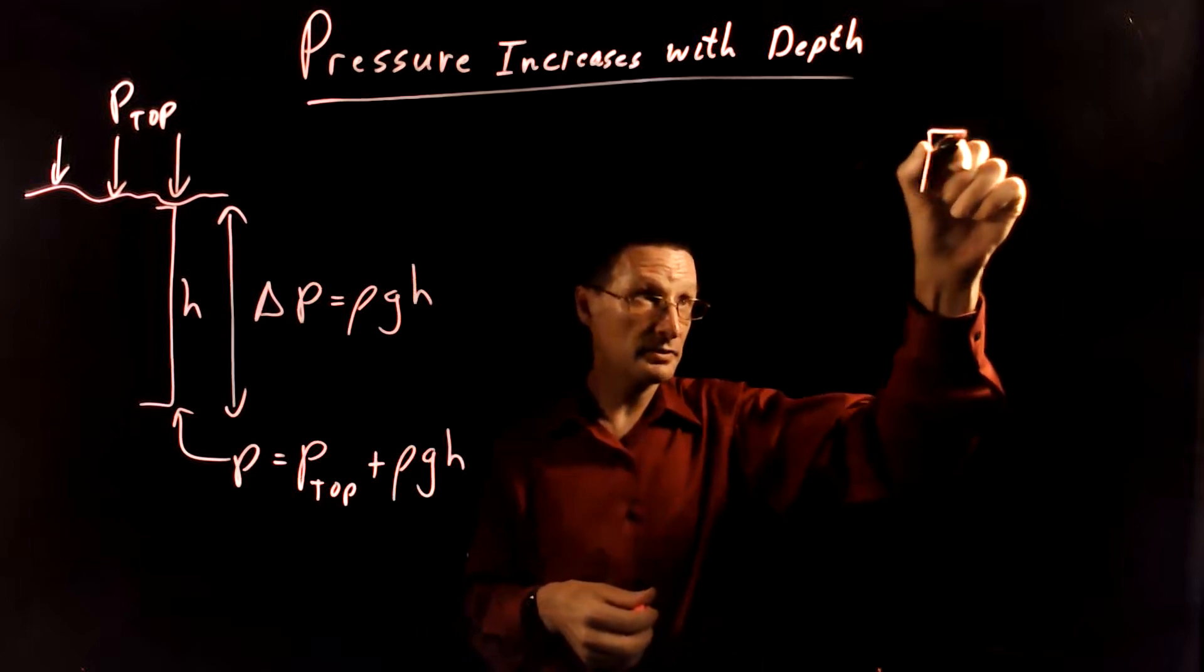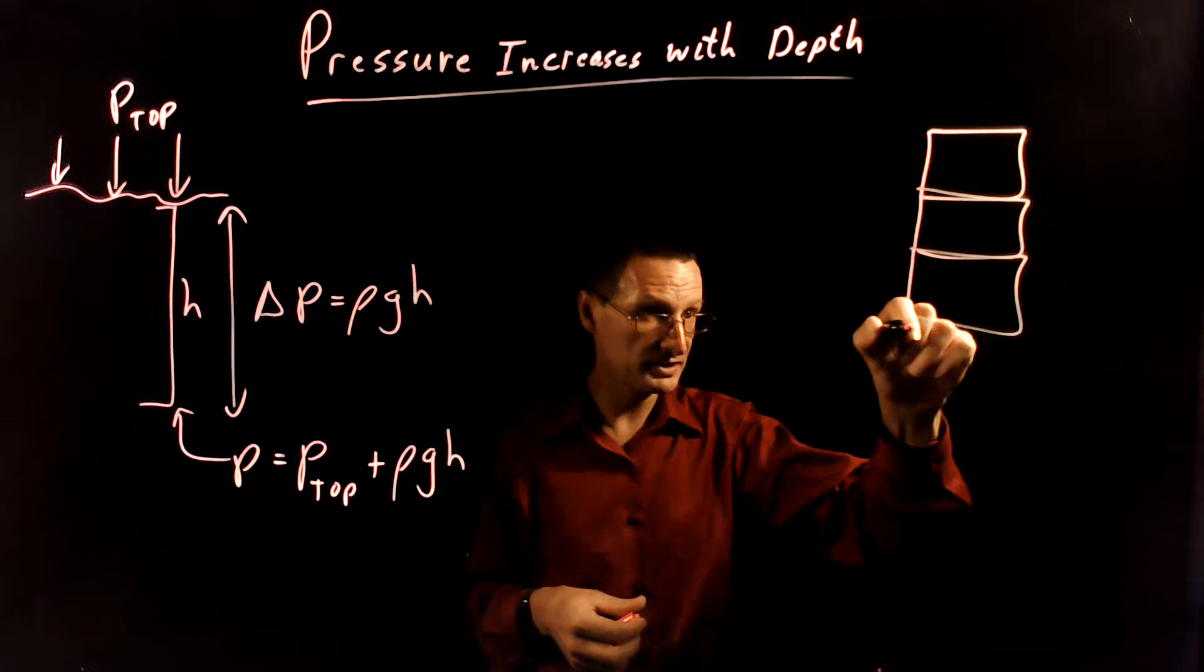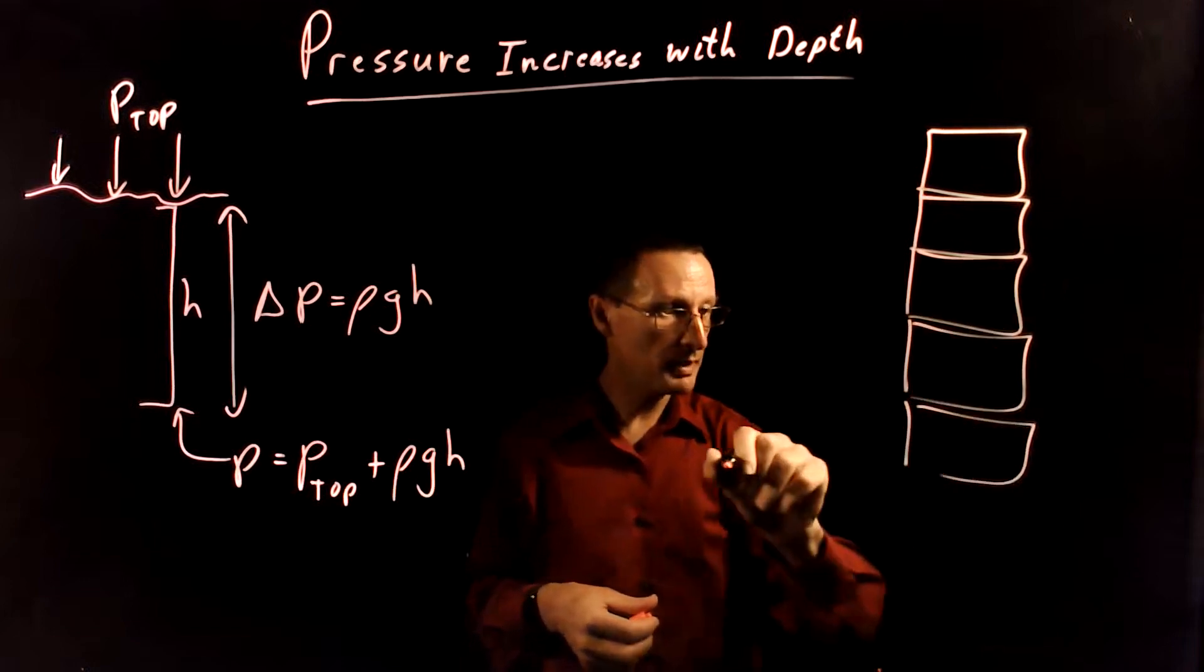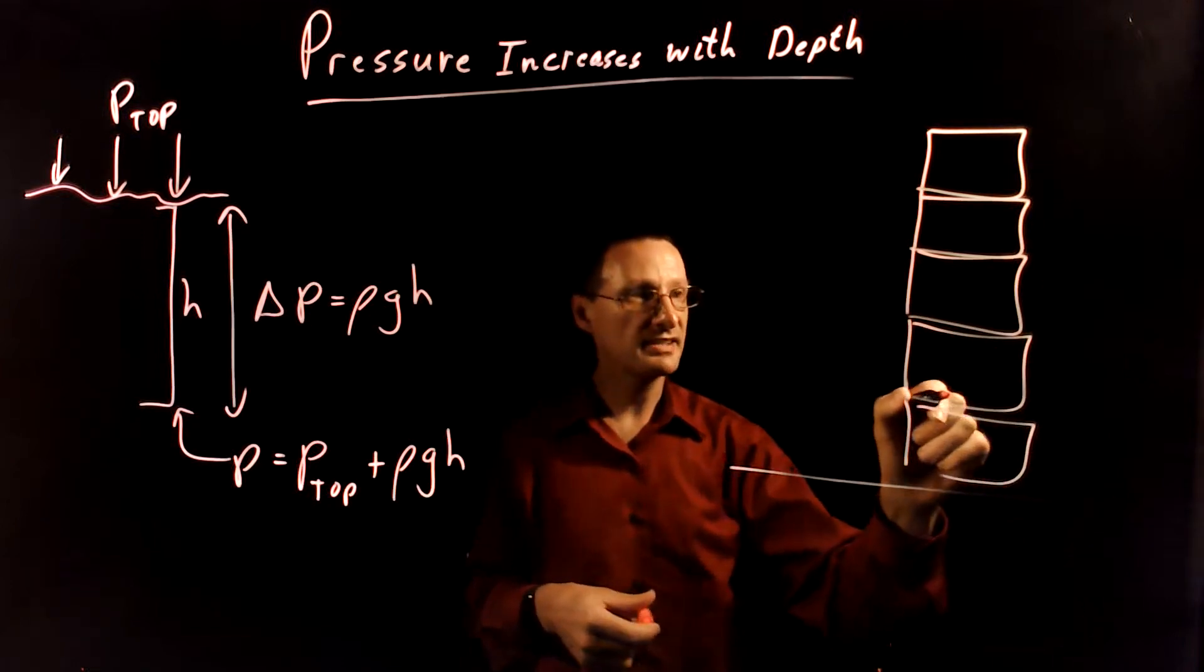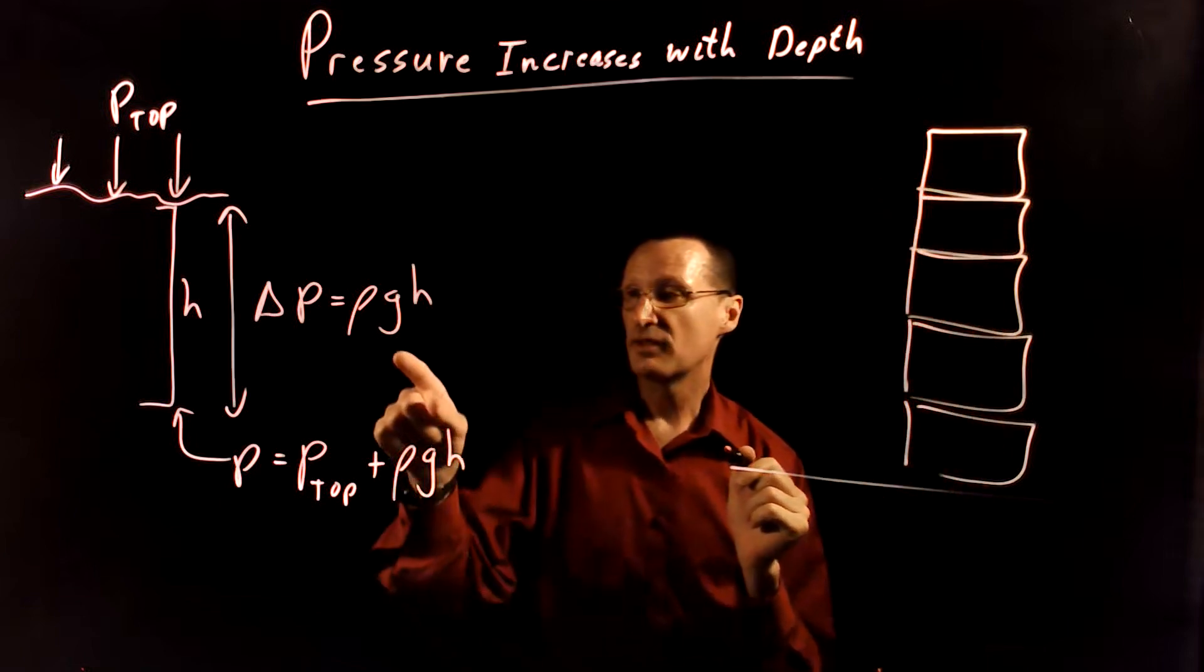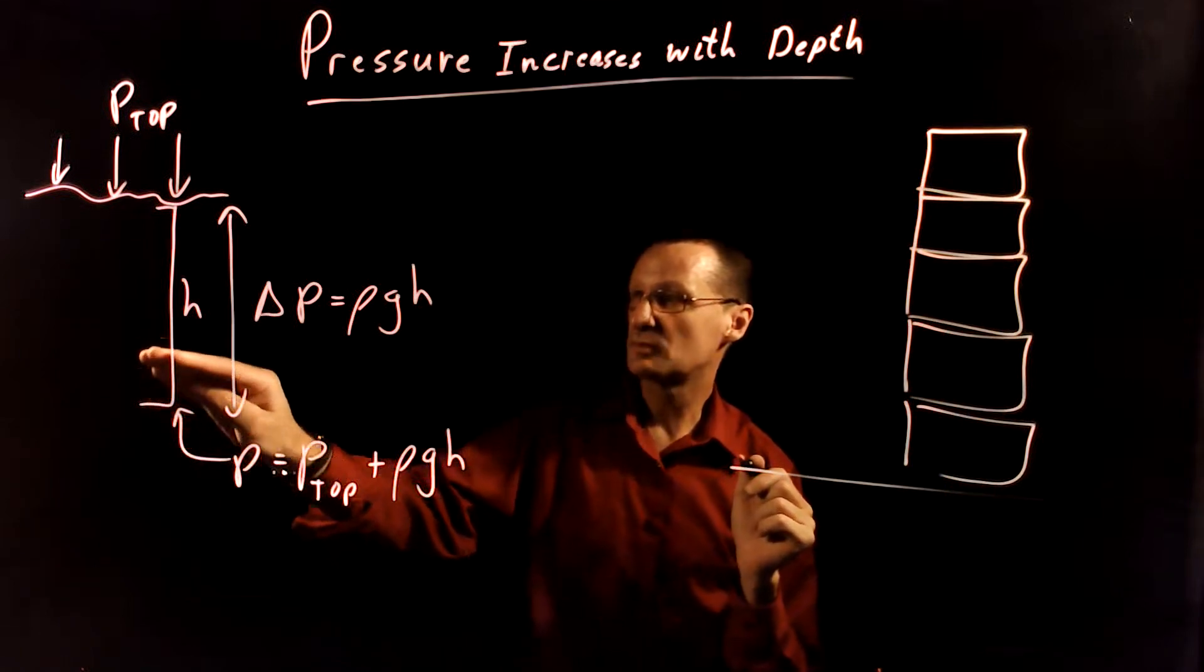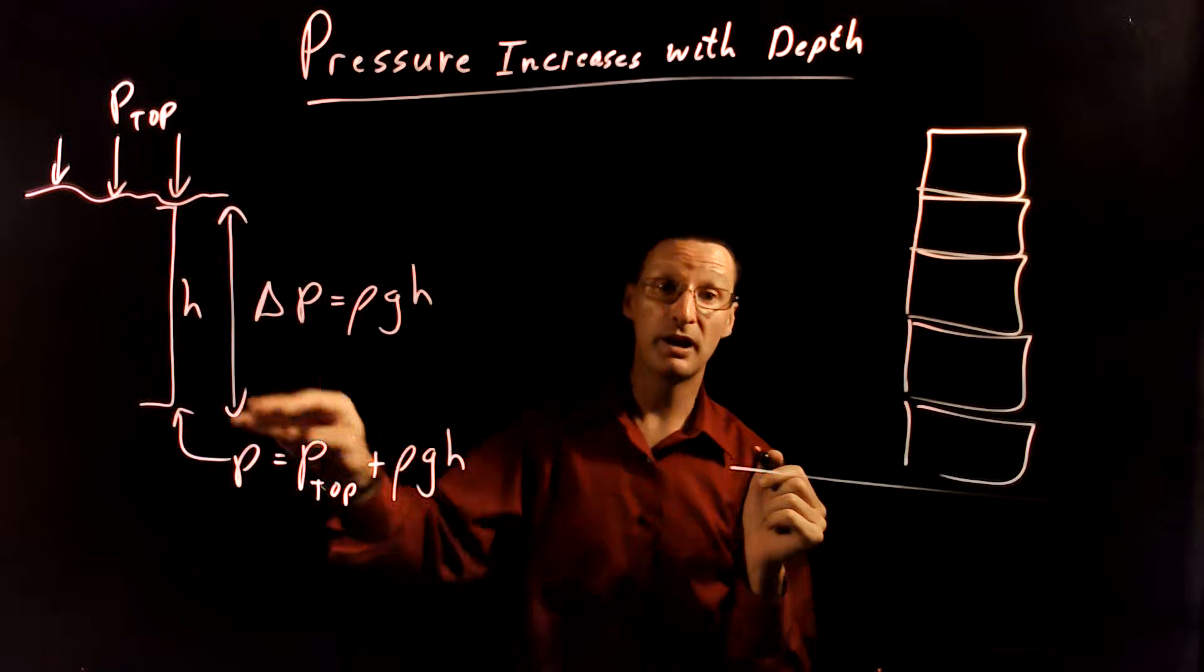Now the intuitive idea here is if you have a bunch of boxes and you stack them on top of each other, the bottom box has to support the weight of all the boxes above it. And so this is showing that the pressure down here is bigger because it has to support the weight of the fluid above it.